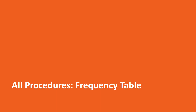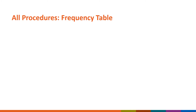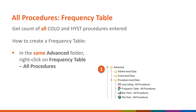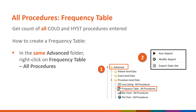In the next few slides, we will briefly go through how to make a frequency table to get a summary count of your colo and hist procedures. Now that you have a line list report of all the procedures, you would also like to get a count of all the colo and hist procedures entered. Therefore, you decide to make a frequency table. In the same Advanced folder, select Frequency Table, All Procedures. Right-click on Frequency Table, All Procedures, and select Modify Report.